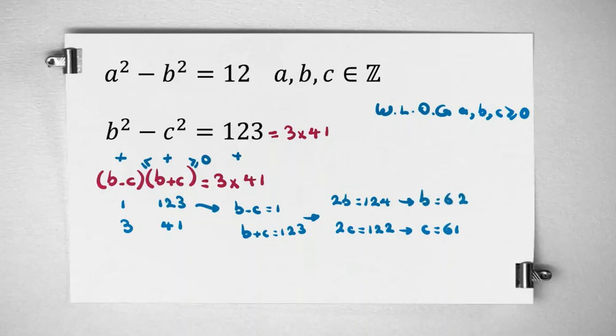Now, we should see, do we have any answer for a? If we replace in a squared minus b squared equals 12, we replace b with 62. So a squared should be greater than 62 squared. If we consider 63, 63 squared minus 62 squared will be greater than 12. So we can see that there is no answer for a here.